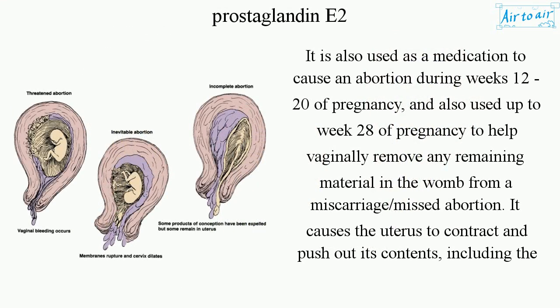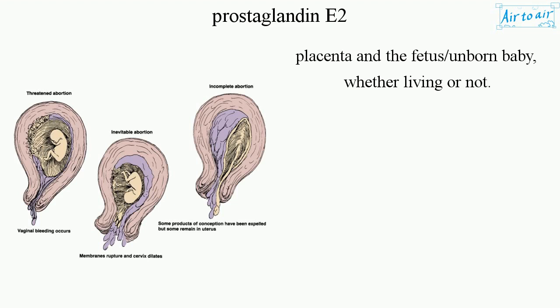It is also used as a medication to cause an abortion during weeks 12-20 of pregnancy, and also used up to week 28 of pregnancy to help vaginally remove any remaining material in the womb from a miscarriage. It causes the uterus to contract and push out its contents, including the placenta and the fetus — unborn baby — whether living or not.